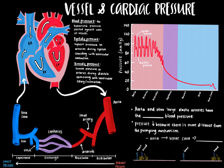Now we will discuss systolic and diastolic blood pressures and vessel types with respect to their effects on pressure gradient and blood flow. Blood pressure is simply defined as the hydrostatic pressure exerted by blood against the walls of blood vessels. Systolic pressure is the highest pressure in the arteries during systole, coinciding with ventricular contraction, and diastolic pressure is the lowest pressure in the arteries during diastole, coinciding with ventricular filling and relaxation.